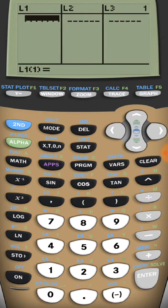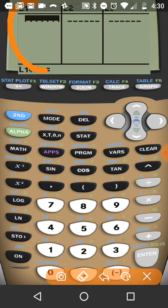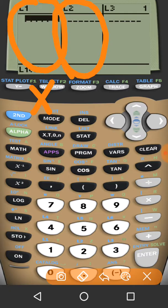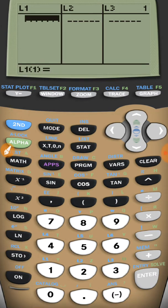So you just want to press enter as soon as you press stat. So stat, then enter, and this is going to take you to some lists. List 1 is typically your x value, while list 2 is your y value.